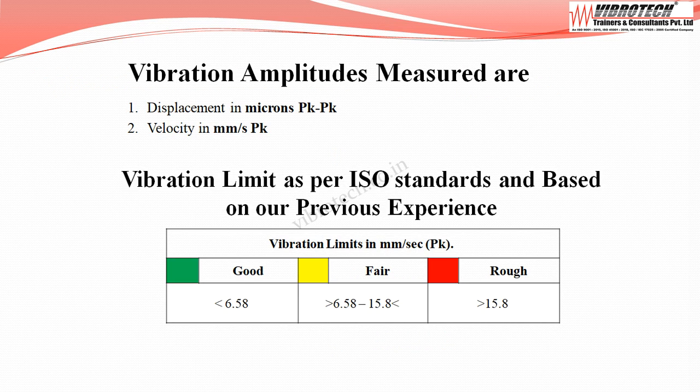Vibration data are collected in terms of displacement in microns peak-to-peak and velocity in millimeters per second peak. As per ISO standard and previous experience, when velocity falls below 6.58 mm/s peak it is considered good; between 6.58 and 15.8 mm/s peak it is considered fair; and above 15.8 mm/s peak it is considered rough.